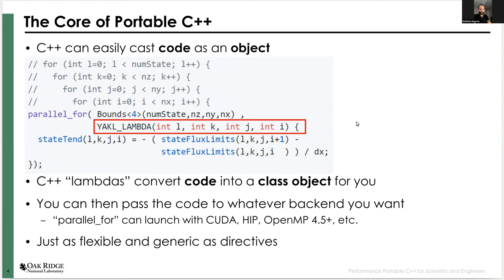It is just as flexible and generic as directives are, with an admittedly odd syntax for a Fortran programmer. In this example you have a set of loops encapsulated by a bounds class, and then you launch the lambda and it inserts the thread index into each of these indices for you. Most C++ portability frameworks have multi-dimensional array classes that can look and feel like Fortran if you want them to.